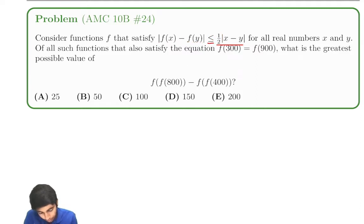So we've got this equation. It looks scary, but we'll break it down. Of all such functions, we're also given that f(300) equals f(900). What is the greatest possible value of f(800) minus f(f(400))? That is a lot.